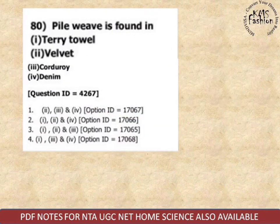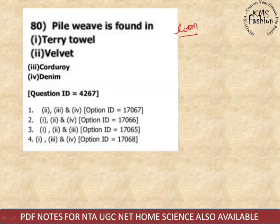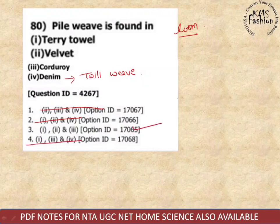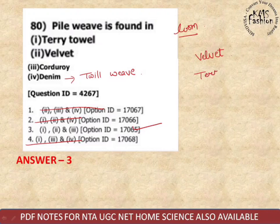Next: pile weave is found in which fabrics? Pile weave is made on a loom through weaving. Denim is made with twill weave, so eliminate denim. The other three are examples of pile weave: velvet, terry towel, and corduroy. Corduroy is made with cut pile.